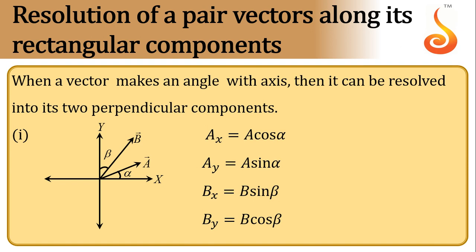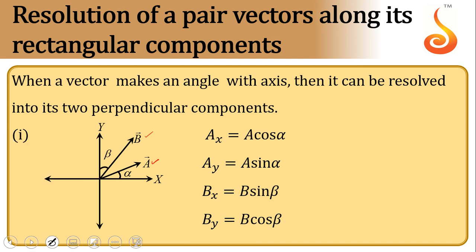We are given two vectors A and B and we are supposed to resolve these two vectors into perpendicular components. Let us consider vector A. Notice that A subtends an angle alpha with the x-axis. Therefore, its x component is A cos alpha and its y component is A sin alpha.